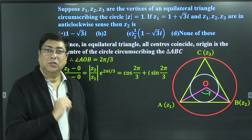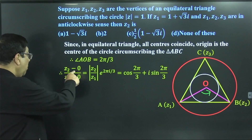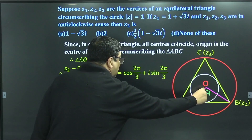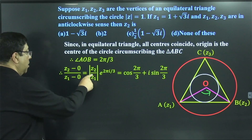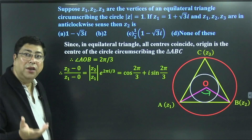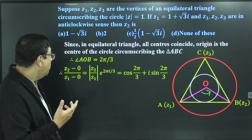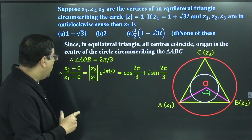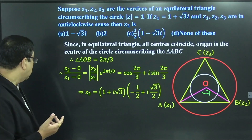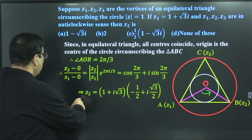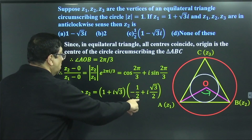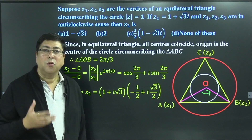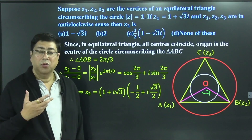Therefore, using the rotation theory with respect to the origin, Z2 minus 0 over Z1 minus 0 equals their modulus ratio times e^(i·2π/3). Since the moduli are equal for an equilateral triangle inscribed in a circle, this simplifies to e^(i·2π/3), which equals cos(2π/3) + i·sin(2π/3). Now cos(120°) = −1/2 and sin(120°) = √3/2. Cross-multiplying, we get Z2 = Z1 × (−1/2 + i·√3/2). Substituting Z1 = 1 + i√3 and simplifying using (a+b)(a−b) = a² − b², the answer comes to be −2.